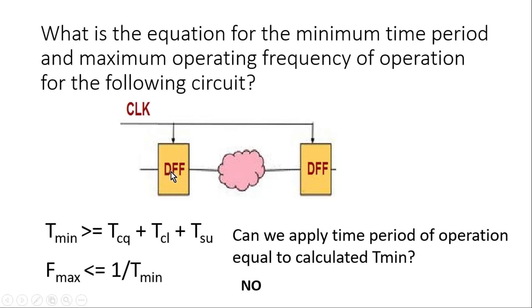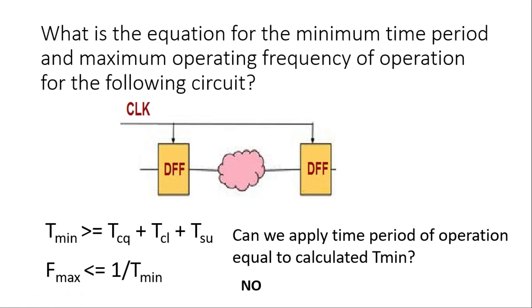The second reason is because of fabrication process variations there will always be a difference in the propagation delay of all the flops in the design and the combinational logic paths. If because of process variations the combinational logic path delay increases, the design will not be able to operate at the calculated T_minimum. So it is always advisable not to operate at T_minimum or F_maximum, but to consider some minimum margin.